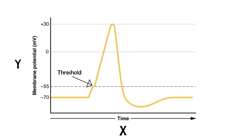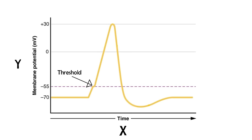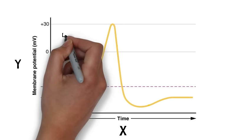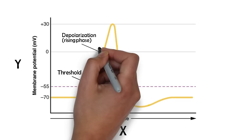When threshold is reached, a large number of sodium channels open, allowing positively charged sodium ions into the cell. This causes massive depolarization of the neuron as the membrane potential reaches zero and then becomes positive. This is known as the rising phase of the action potential.